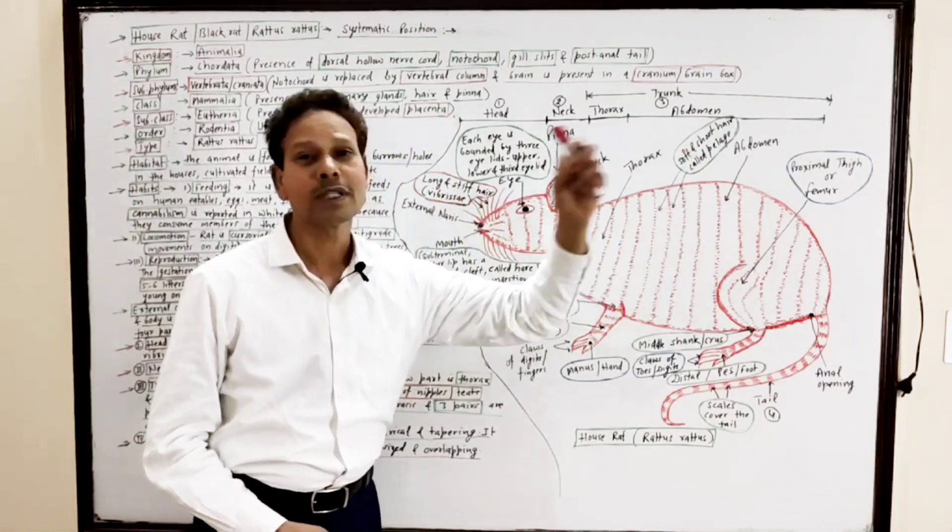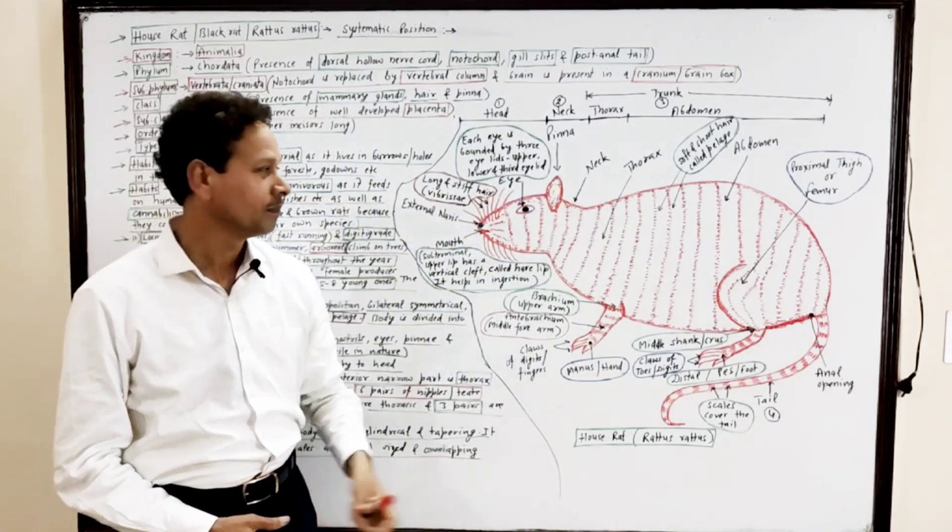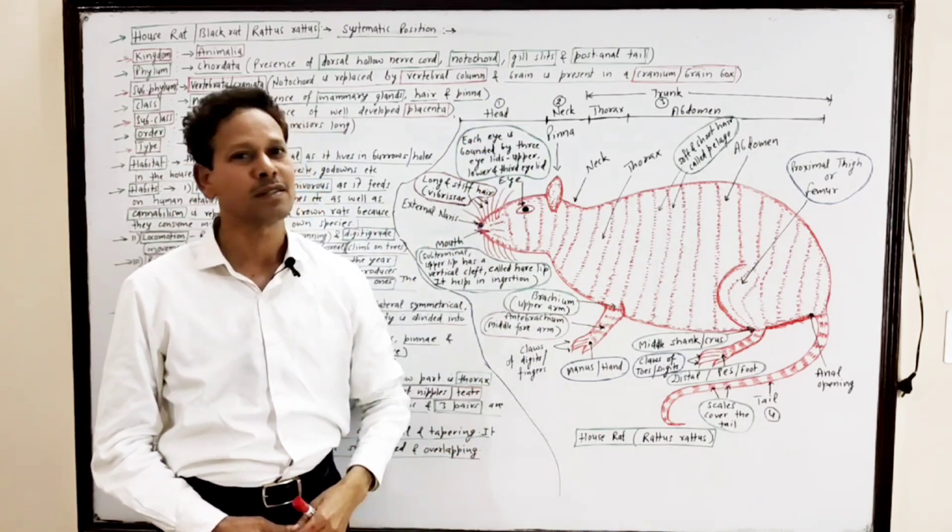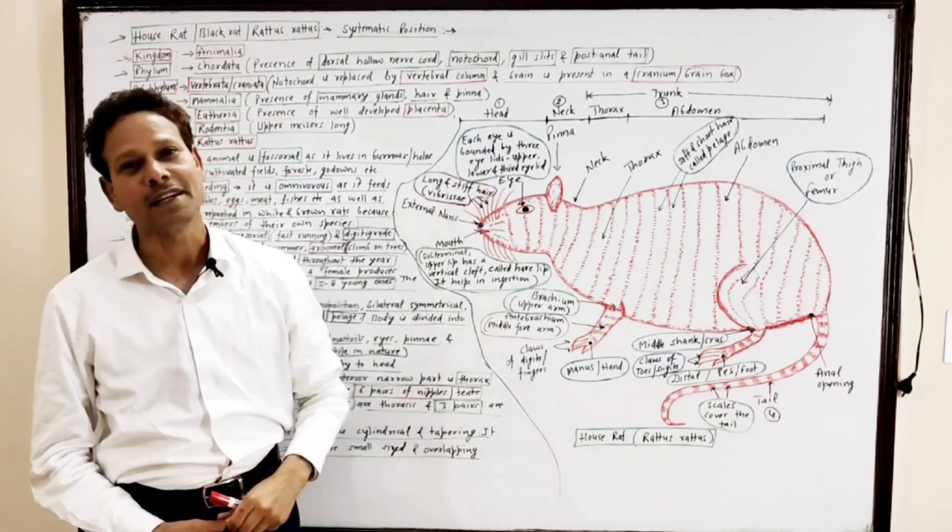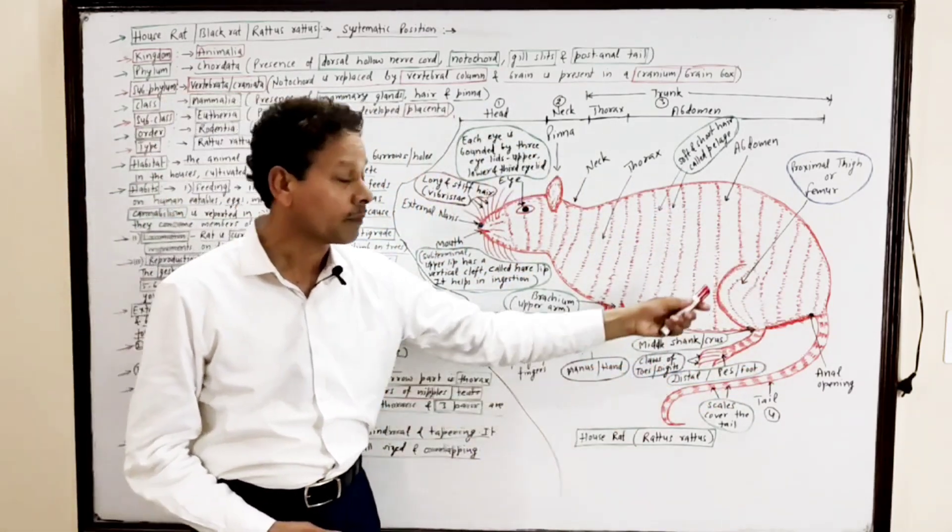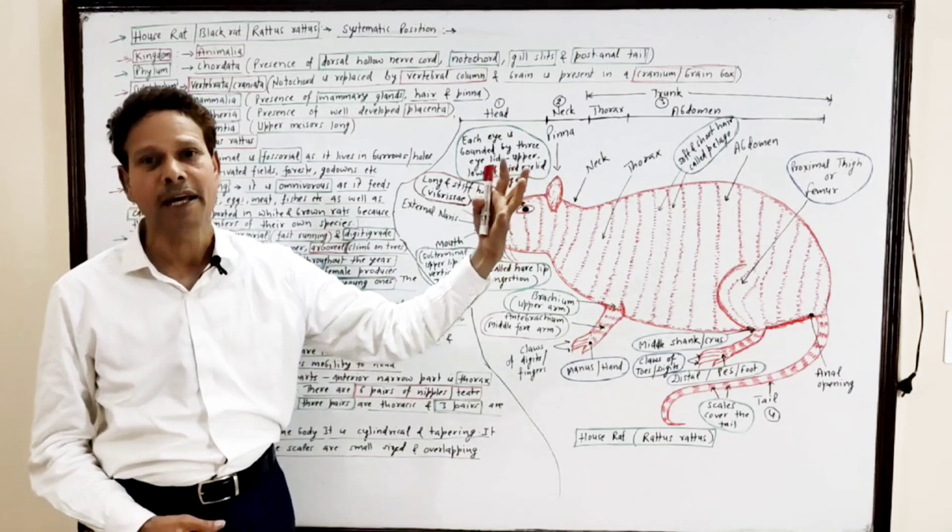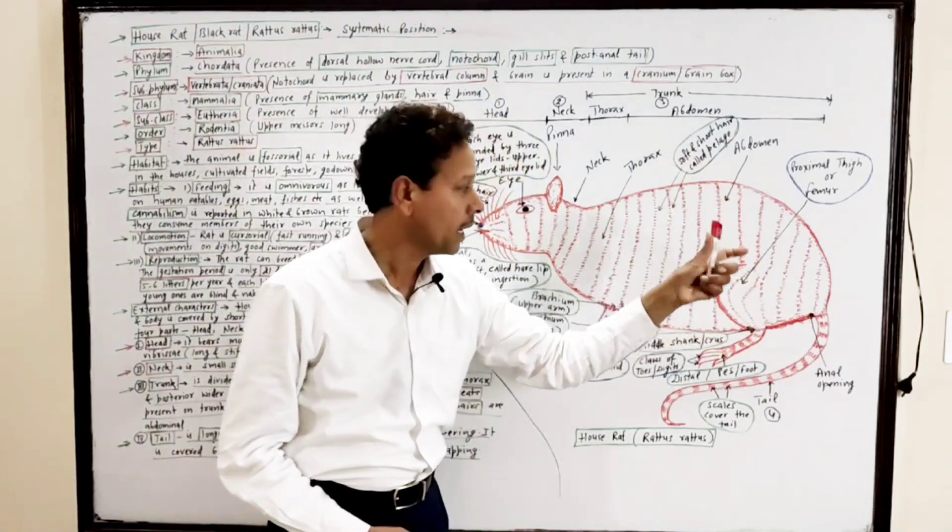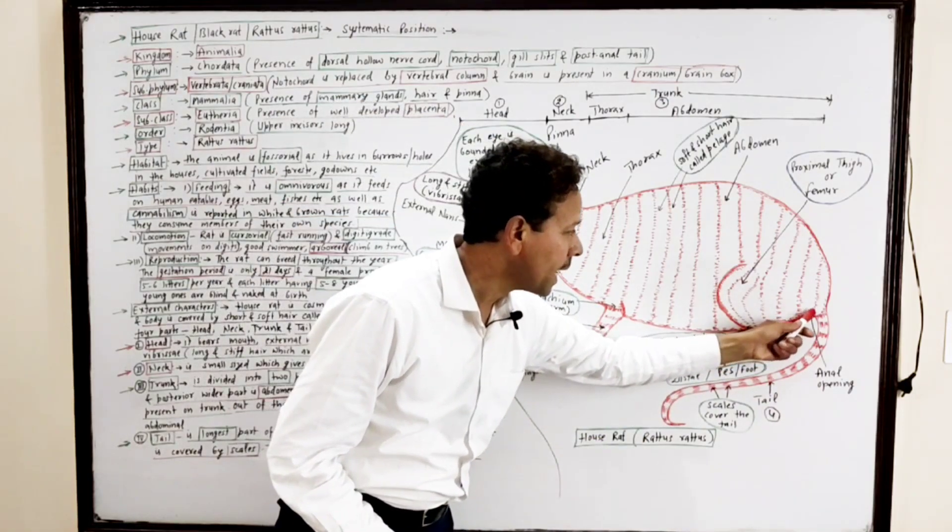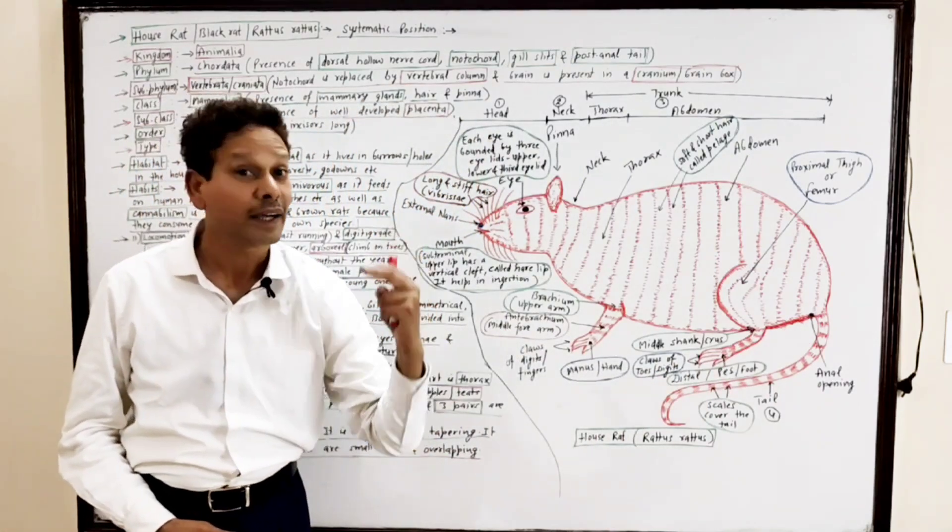As well as on the dorsal side, a dorsal hollow nerve cord is present. In the pharyngeal region during developmental stages, appearance of gill slits occurs. And in the last terminal part, a post-anal tail is present, just behind the anus.